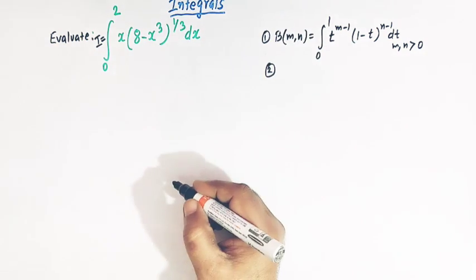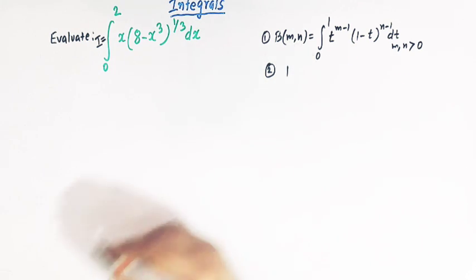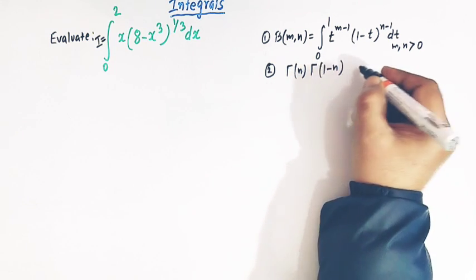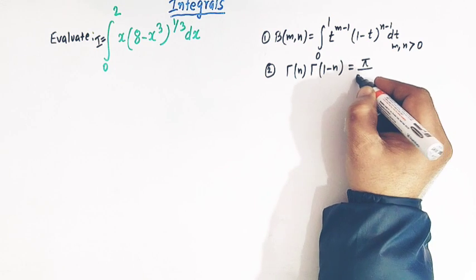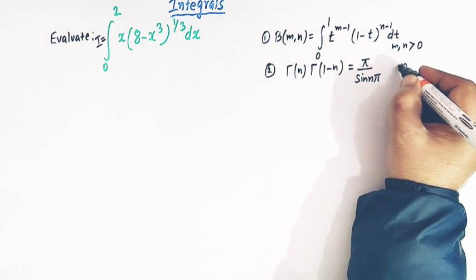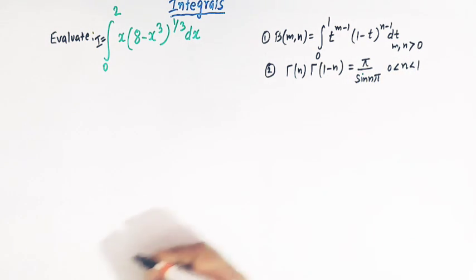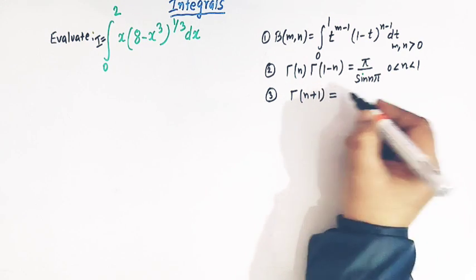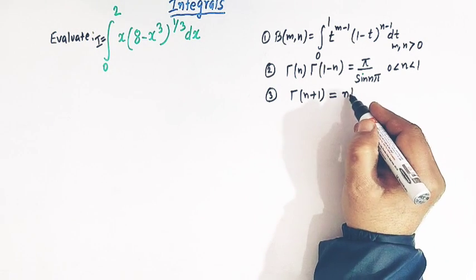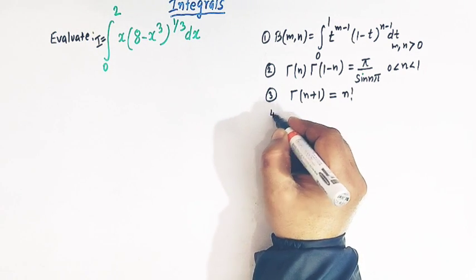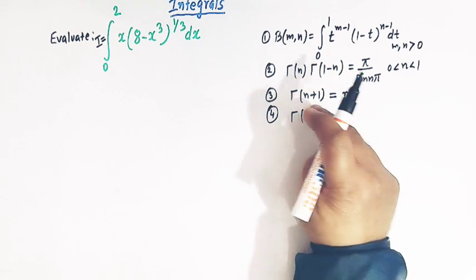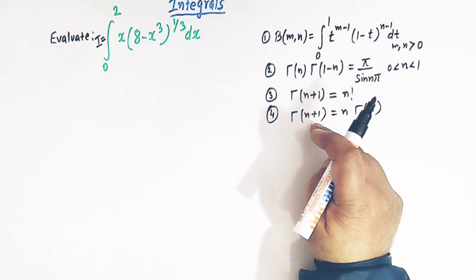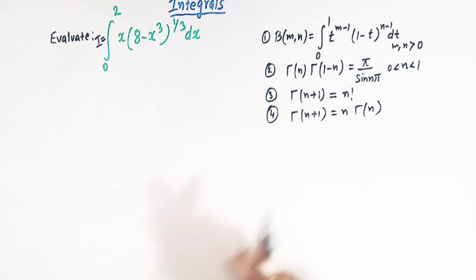The second result is Euler's reflection formula: gamma(n) times gamma(1 minus n) is equal to pi divided by sin(nπ), where n lies between 0 and 1. The third result is the gamma recurrence: gamma(n plus 1) is equal to n times gamma(n), when n is positive and n is not an integer.